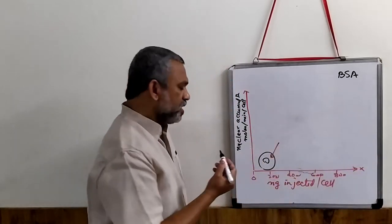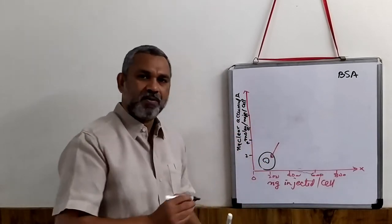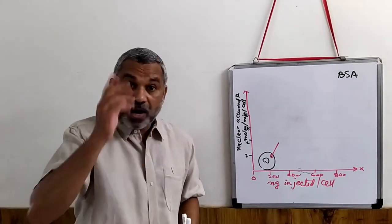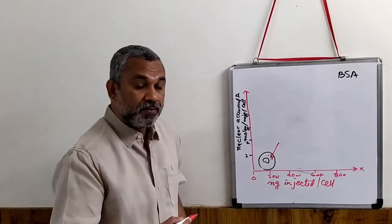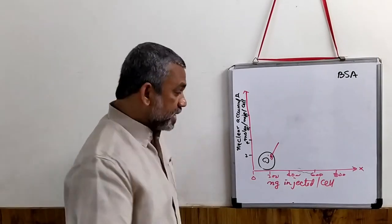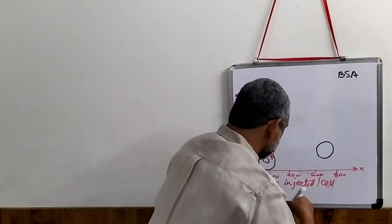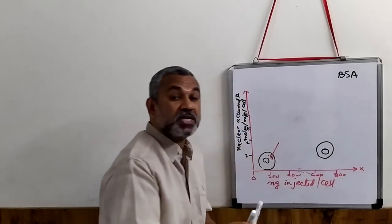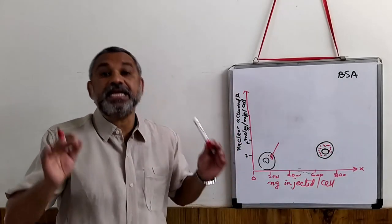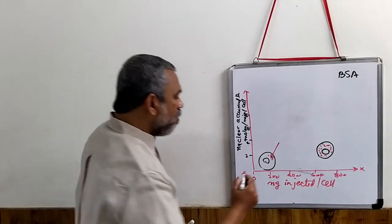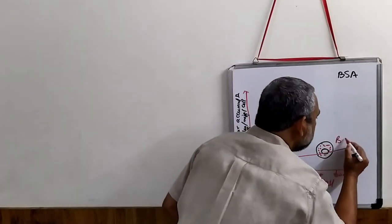The y-axis is in moles per minute per cell, with values like 2, 4, 6, 8, and so on. What did they observe? They injected BSA, and as the concentration increased, what was observed is the BSA got spread and stayed in the cytoplasm itself over a period of time. It stayed in the cytoplasm. So this is just BSA only.